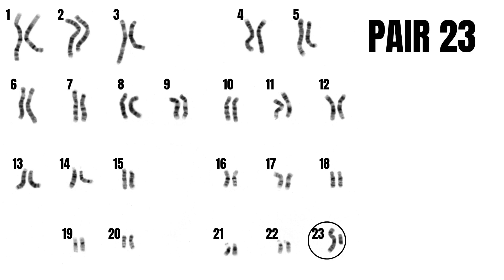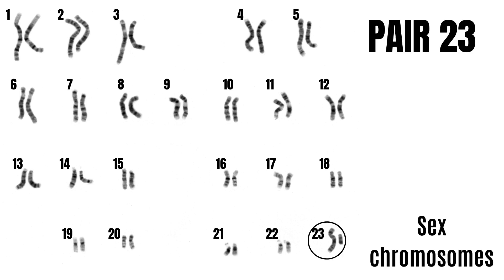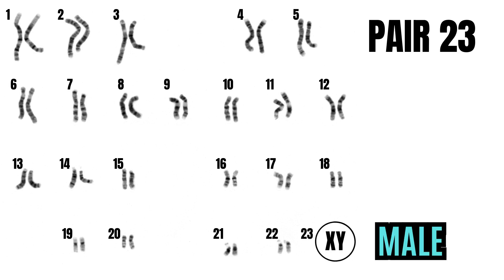The 23rd pair are referred to as the sex chromosomes, since this pair determines the sex of the individual. Boys inherit the Y chromosome from their father and the X chromosome from their mother, while girls inherit two X chromosomes — one from their mom and one from their dad.